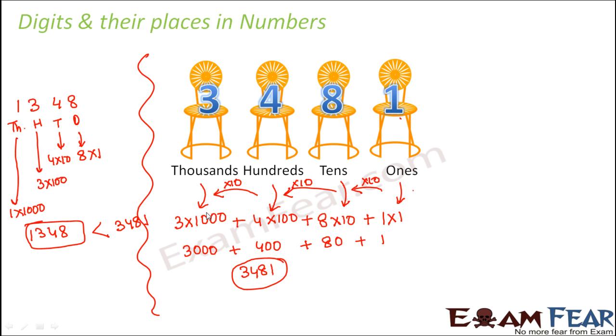Now, we understand that whenever we multiply by 10 at each step, we reach towards a bigger number or we reach towards a bigger place or higher place. Now, what should happen if we divide it by 10? Let's say that we start with the 1's place again. But this time we do not multiply by 10. Instead, we divide by 10. Then what should happen? In that case, we should be moving towards smaller places and therefore smaller numbers. So let's see what would happen if we start, instead of multiplying by 10 for every step, if we start dividing by 10 at every step.